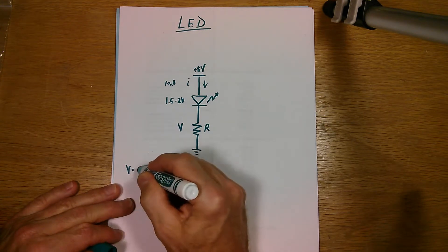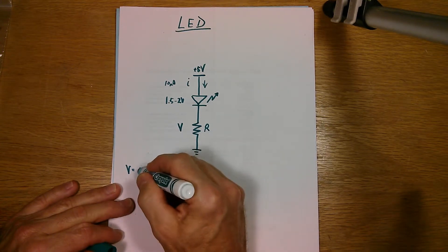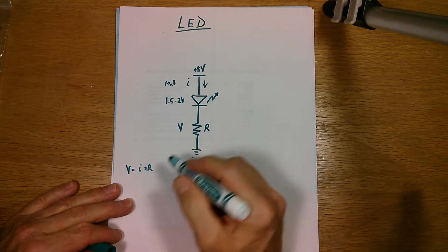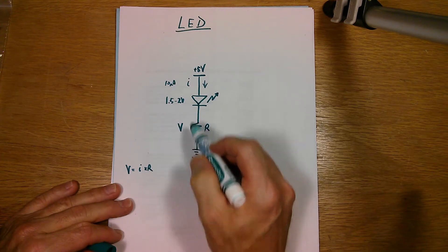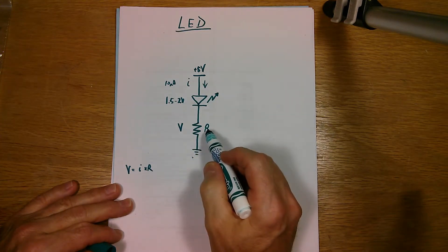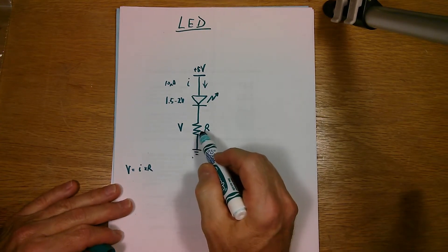Ohm's law, as you remember, is equal to V equals the current times the resistance. So the voltage across this resistor is equal to current flowing through it, which is this current, flows through the diode and the resistor, the same current, times the value of the resistor.